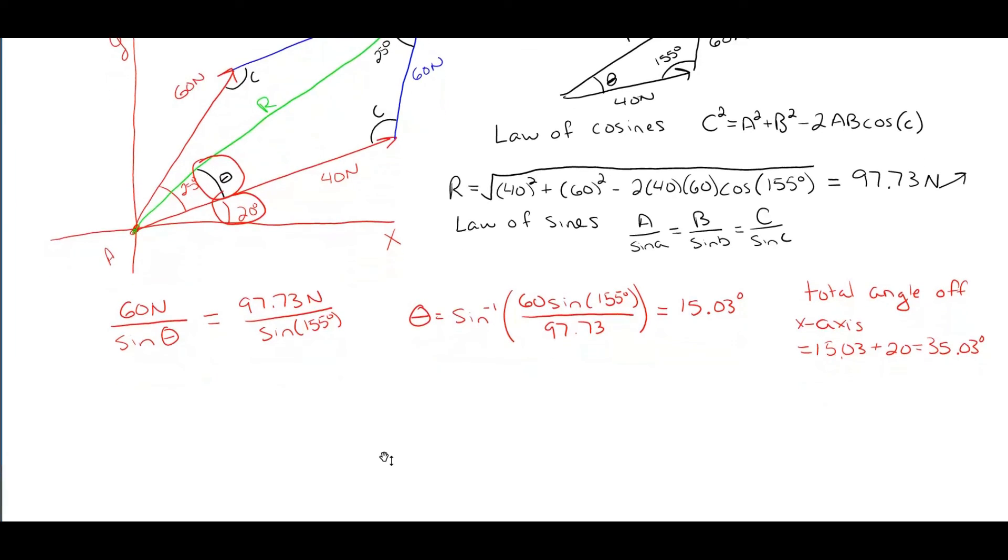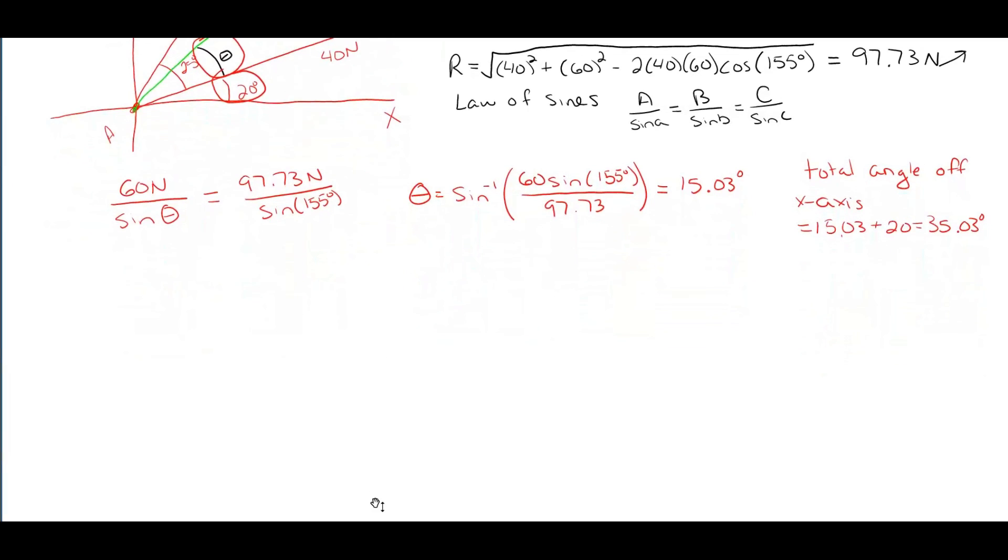So in the end here, those two forces of 40 and 60 will become this one singular resultant force. That would look like this of 97.73 newtons at an angle off of the x of 35.03 degrees. And that is our final answer.